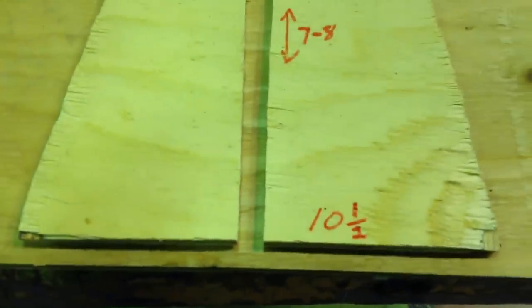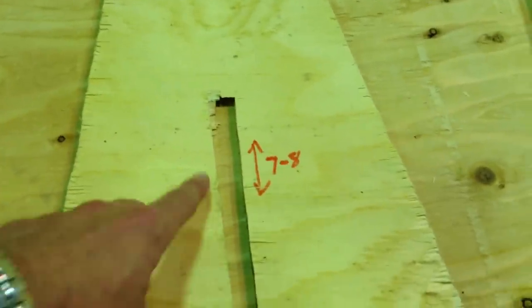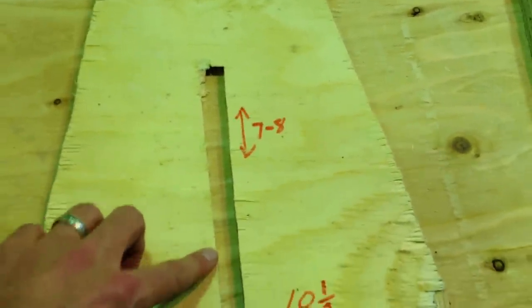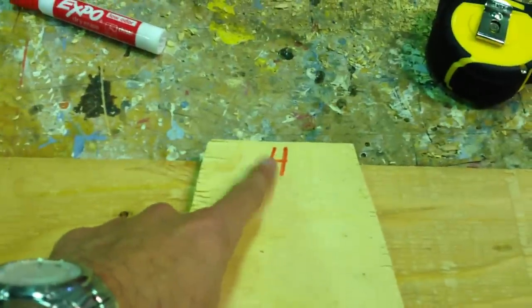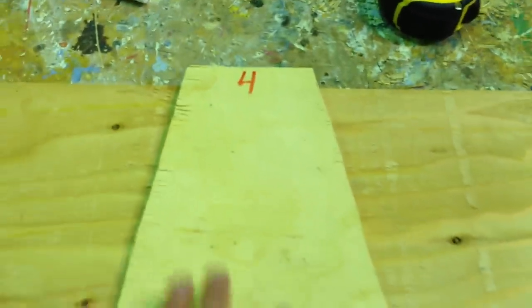So this piece is cut ten and a half long total. The slot that I use is between seven and eight inches long and it's about three-quarters of an inch wide. And then at the other end you've got four inches instead of five, and this whole unit is again 19 inches long and you'll need two of these.